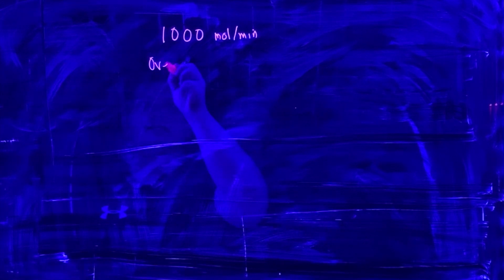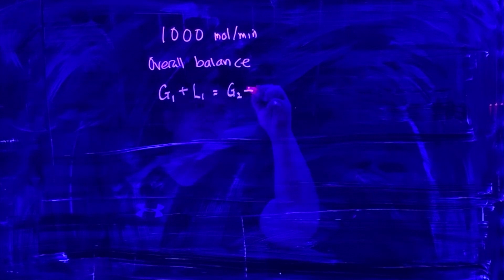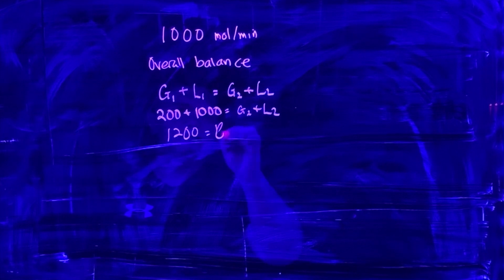We have the overall balance which is G1 + L1 = G2 + L2. Here we have 200 + 1000 = G2 + L2, so this equals 1200 = G2 + L2. This is one equation.